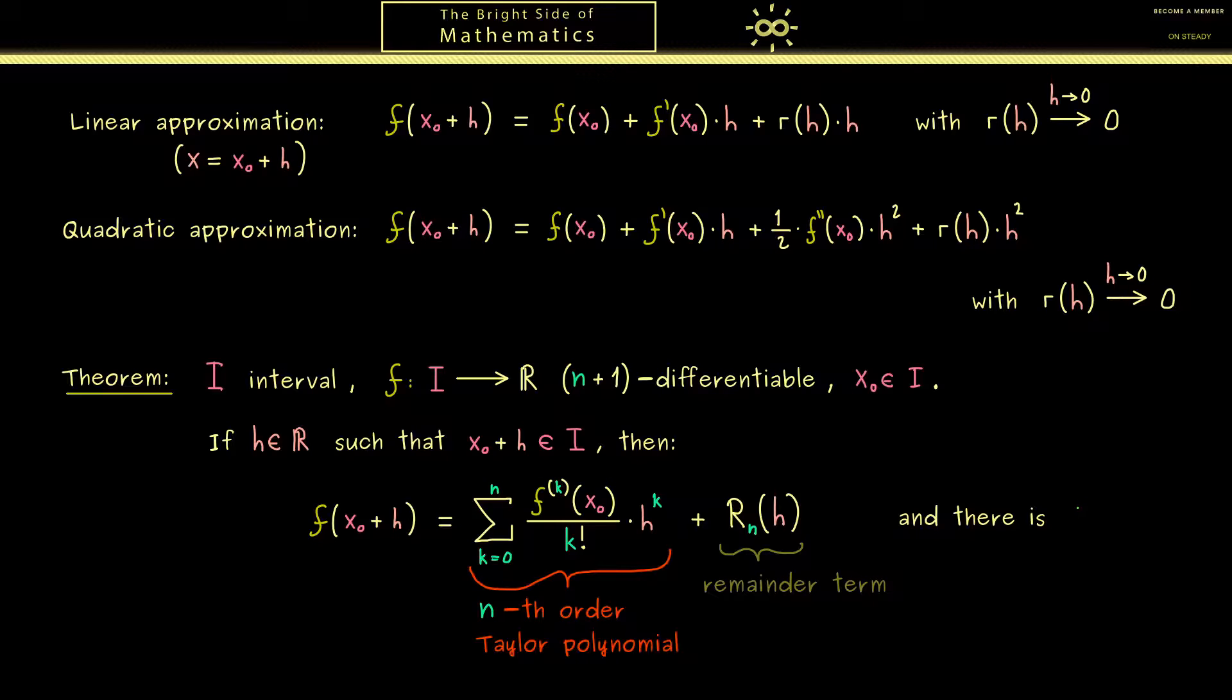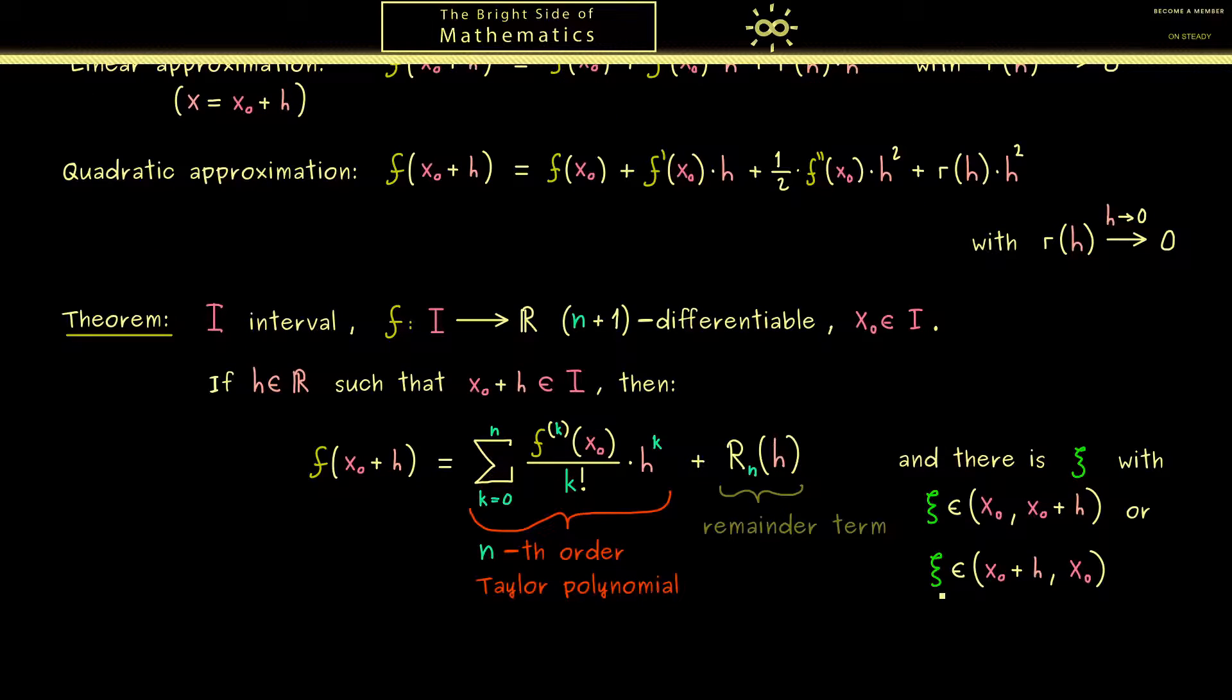From this it follows that we find an intermediate point we call xi. This is a lowercase Greek letter also often called xi. Now the important part is that this number lies in between x0 and x0 plus h. This means that if we want to write this as an interval we have to distinguish two cases. It just depends which of the two numbers here is bigger than the other one.